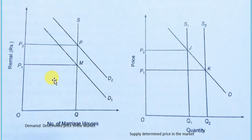In the market period, each firm has a stock of commodity to be sold in the market. This stock of goods with all the firms makes the total supply. Since the stock is fixed, there is a perfectly inelastic supply curve in the market.